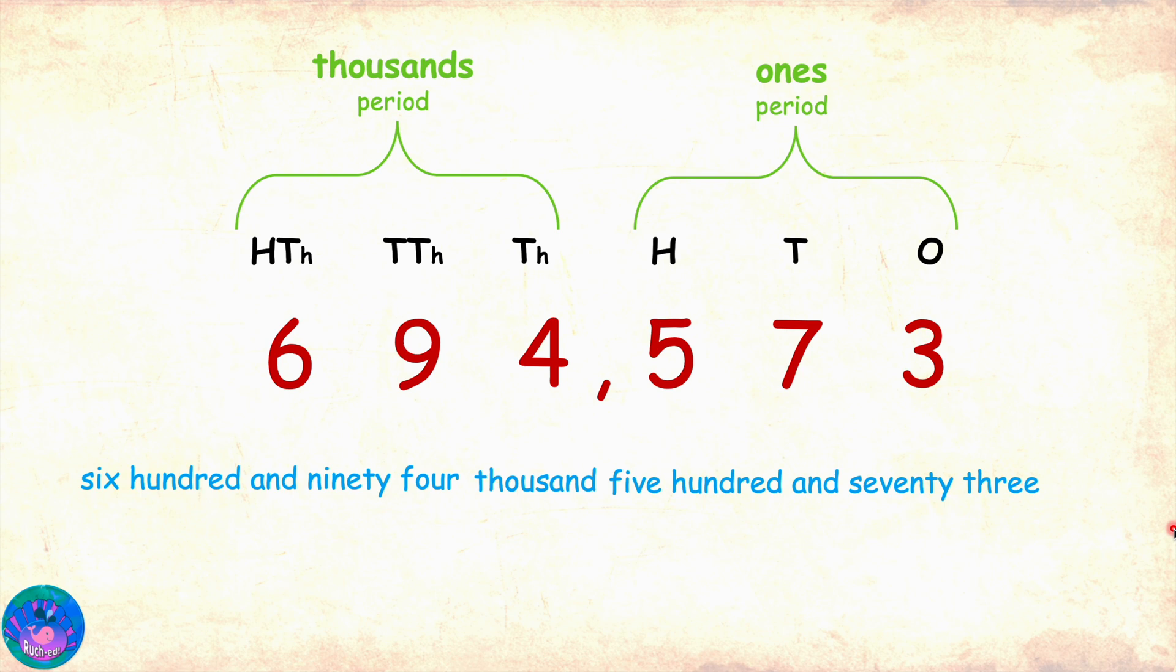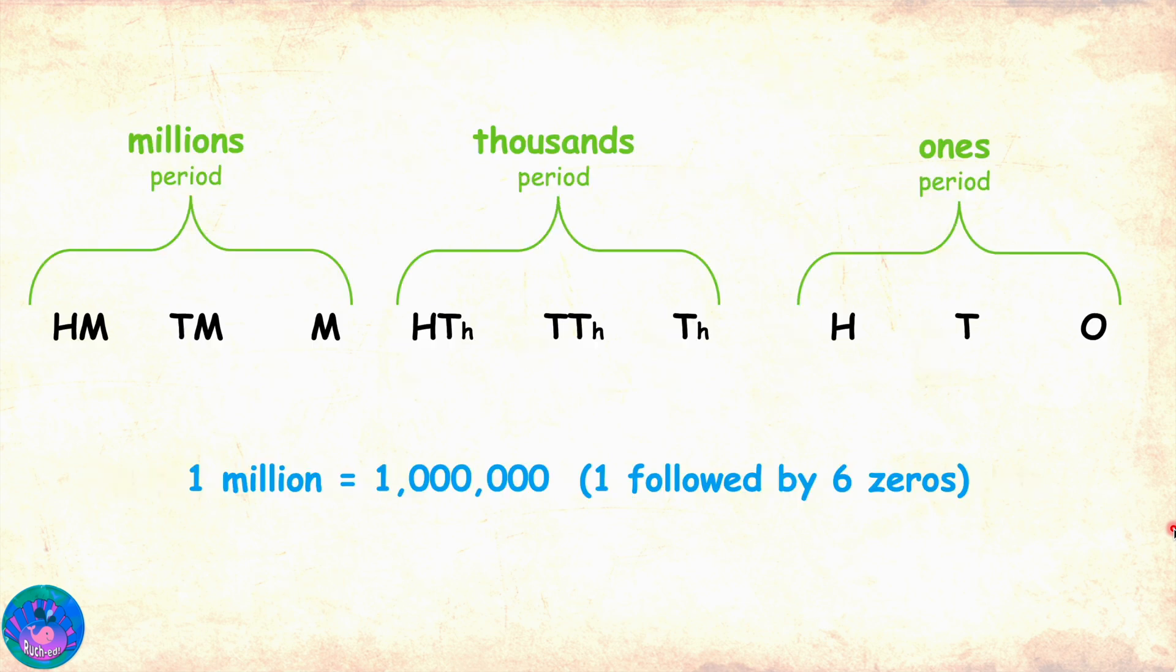Well done! Sir, I understand this well. Now, what about numbers with more than nine digits? I guess we will continue to group into periods. But, what would be the period names after millions? Remember, one million is one followed by six zeros. And one hundred million is one followed by eight zeros. Now, after millions, the next period would be billions.